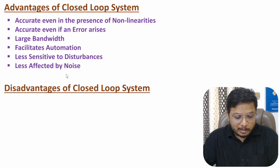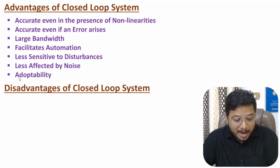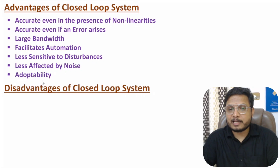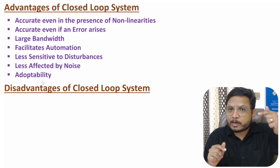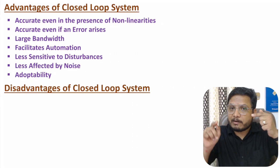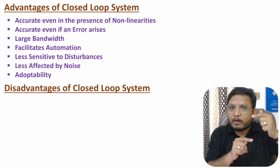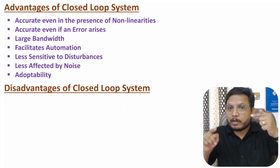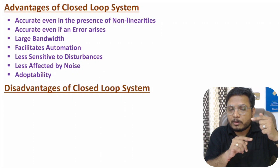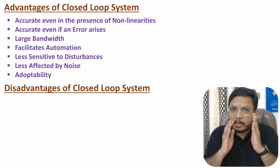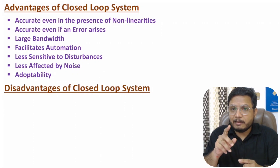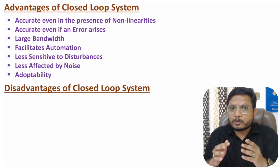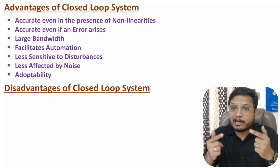Closed loop systems have better adaptability. The reason is control action is taken with respect to input and feedback — or one can say with respect to input and output. Based on both input and output, control actions are taken, which leads to higher adaptability.